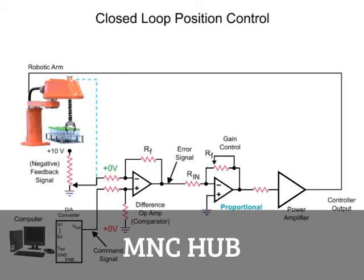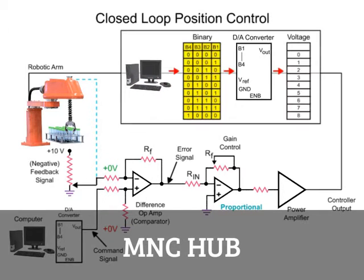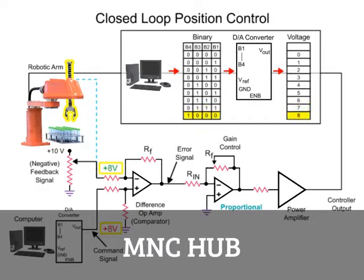For example, with the arm at the bottle-pick position, the potentiometer output voltage of zero matches the command signal of zero from the computer. To change the arm to another position, a command signal from the computer is required. The command signal consists of binary numbers that increment until a value is reached that represents the desired position. The binary value is then converted to an analog voltage by the digital-to-analog converter, indicating the position that the arm is required to move to.